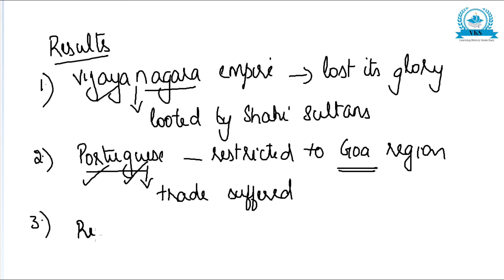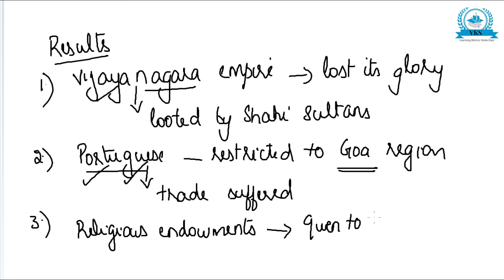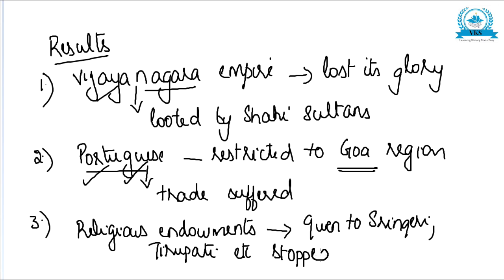The third result was that religious endowments — the financial support and donations given to religious centers like Shringeri, Tirupati, and Sri Shaila — were stopped by the Shahi Sultans. Since the Shahi Sultans were Muslim rulers, they discontinued the support that the Vijayanagara rulers had been providing to these temples.